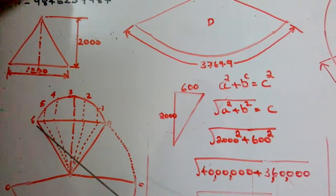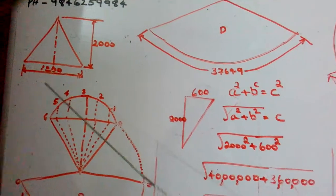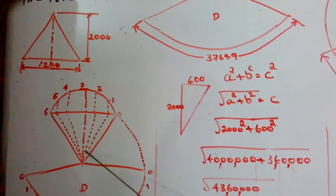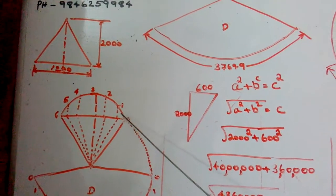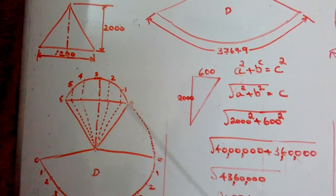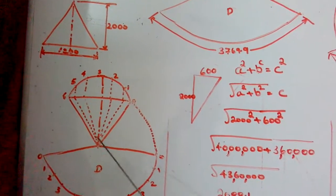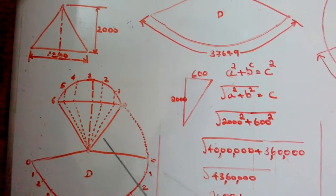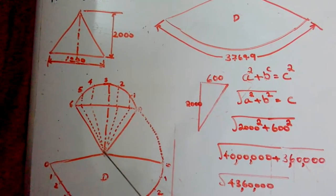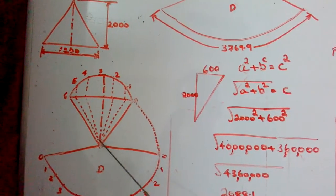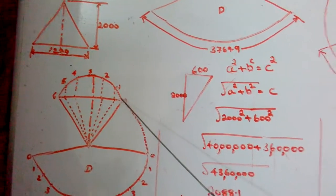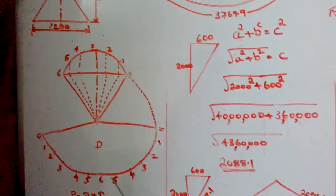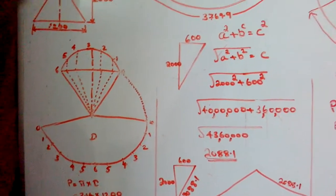When we draw 1200 from here to here — that is 1200 — and its vertical height is 2000, if we draw it we will get this slant measurement. But we had to draw this layout on the floor, which costs time and accuracy. For making the development, we need two measurements: one is this radius, and the second is the perimeter.